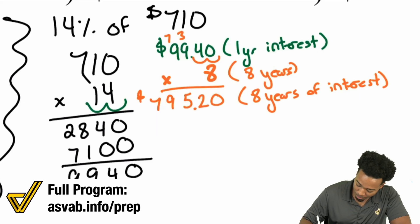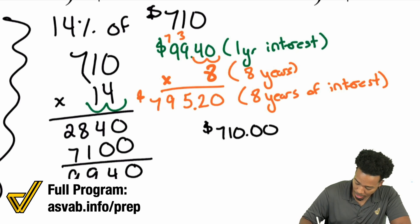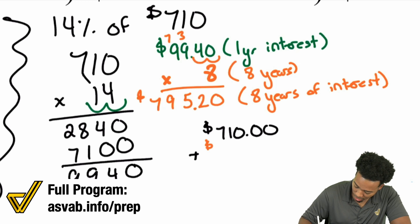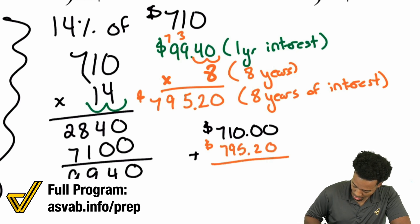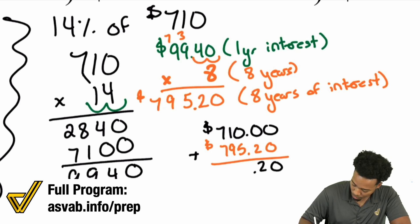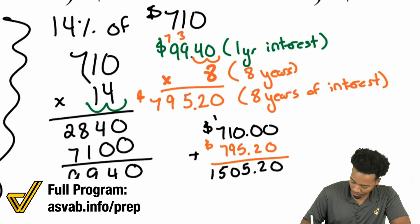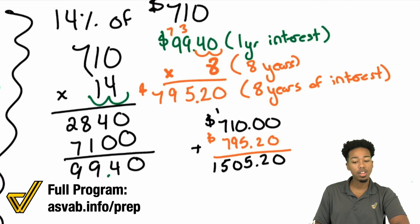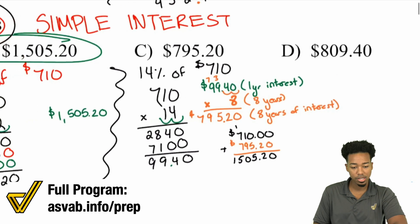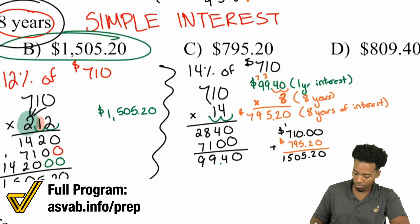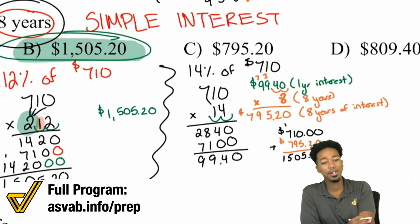So we're going to take the original amount, the $710, and add alongside of it the $795.20. $710 plus $795.20 equals $1,505.20. Doesn't that look familiar? Notice my math party people — there are two ways to get it done.